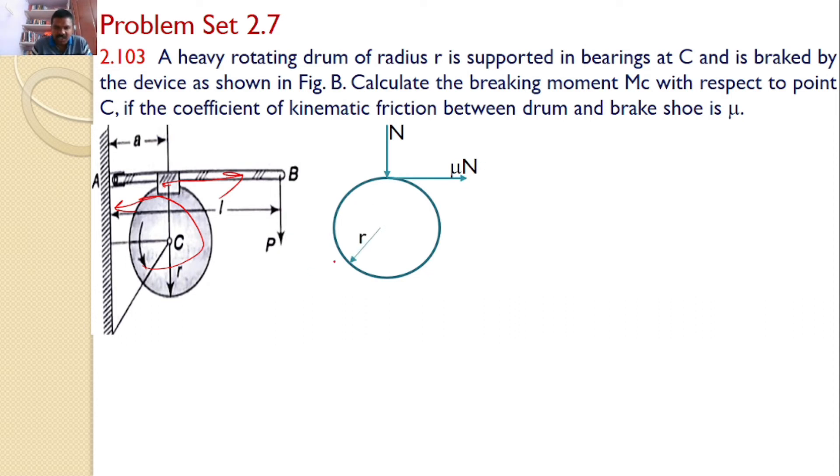The radius is R. The braking moment is equal to the force into distance which is nothing but mu N into R with respect to C. Since this distance is R, the braking moment becomes mu N into R.